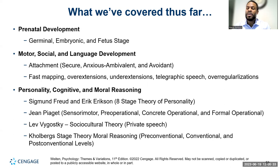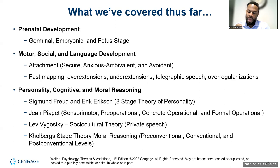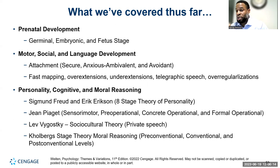We talked about Kohlberg's theory of moral reasoning: the pre-conventional, conventional, and post-conventional levels, each with two independent stages. In the pre-conventional level, external authority is key — right is right and wrong is wrong based on what you're rewarded or punished for.